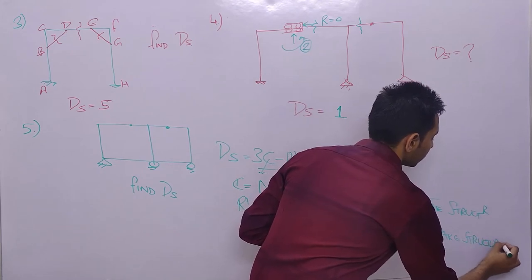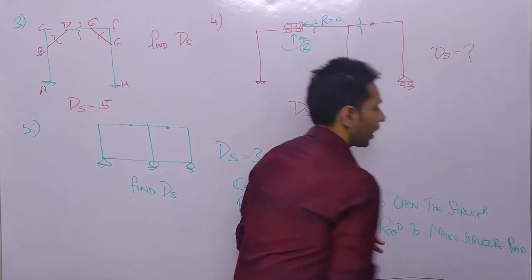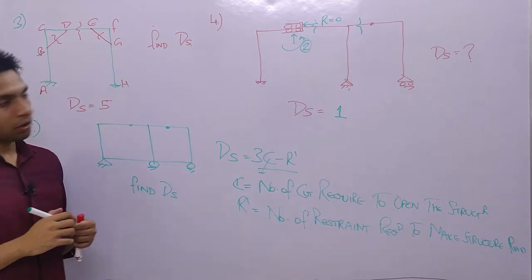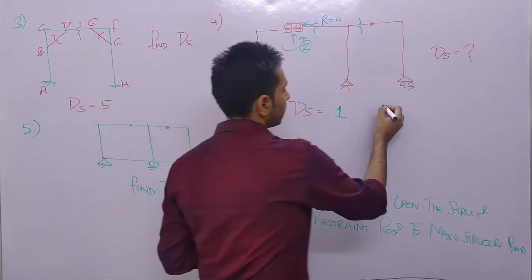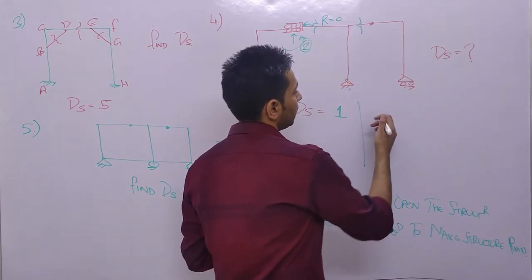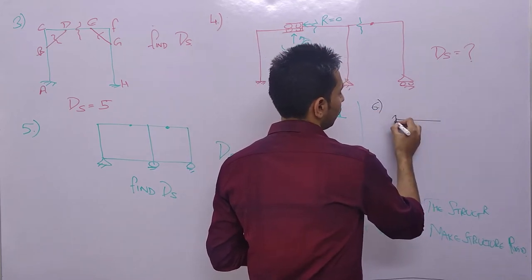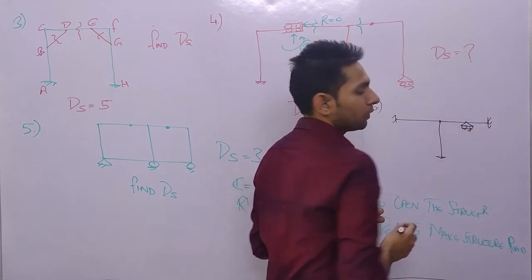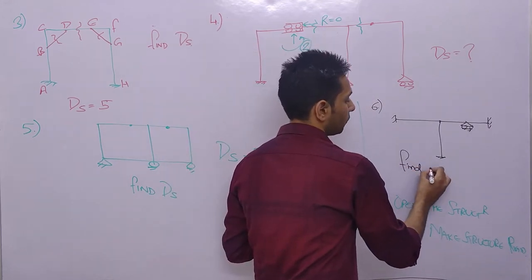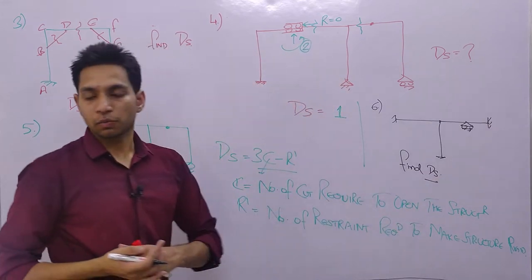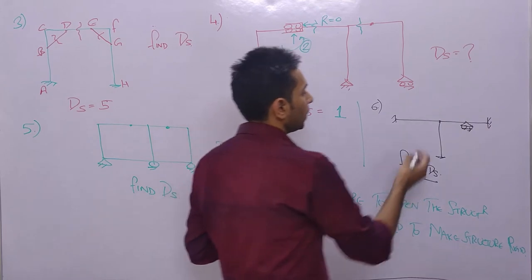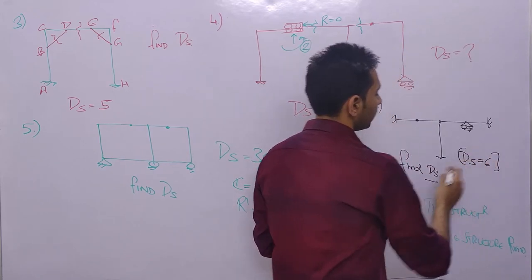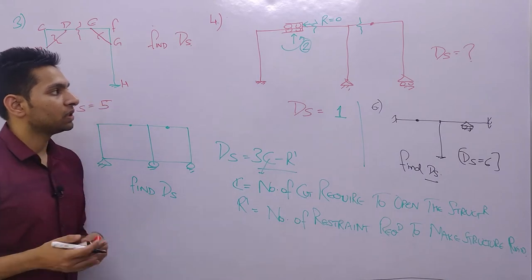These are the types of questions asked from frames. In the sixth example, you are given a frame with a support condition and possibly a hinge at a certain point. You have to find the degree of static indeterminacy. Solving this problem gives ds equals 6.